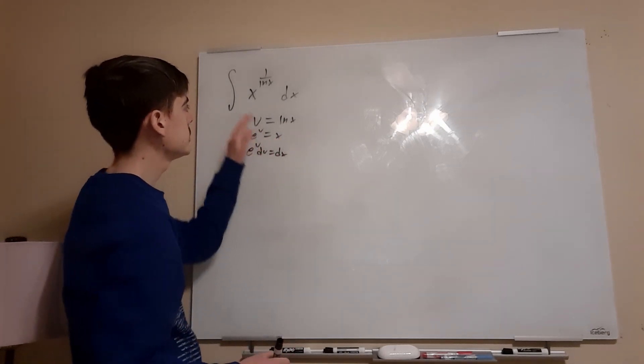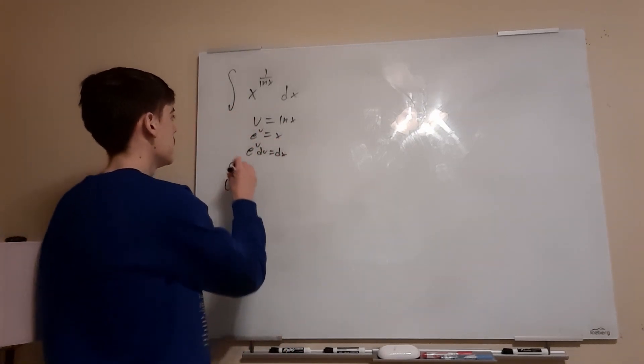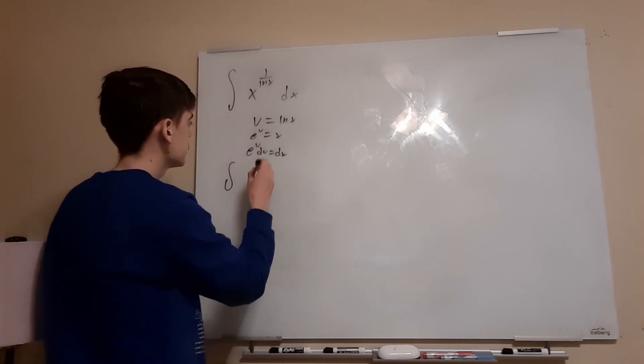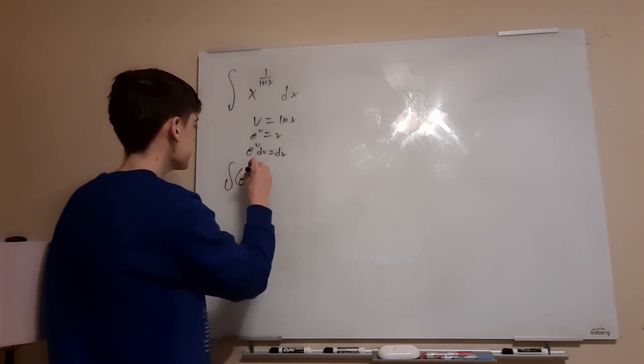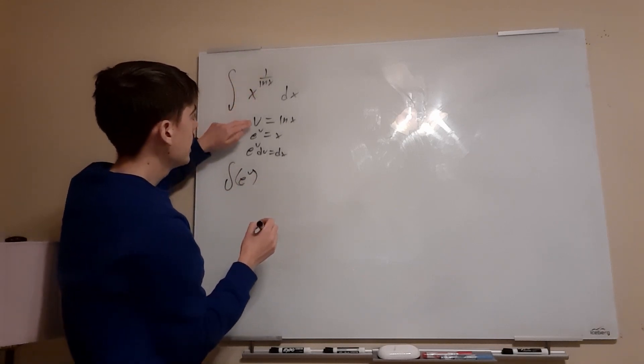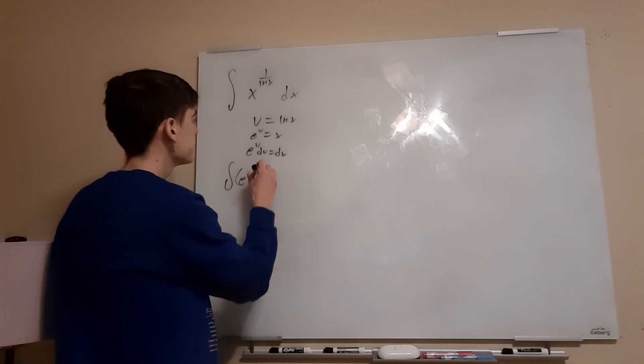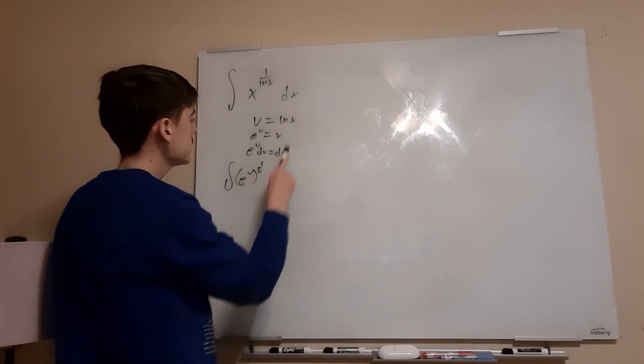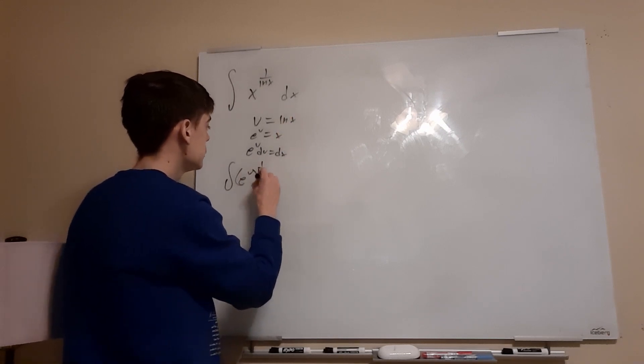So let's just plug this information back into our original integral. So x is right here. We could just replace that with e to the u, as we saw before. That will be raised to the power of 1 over ln x. ln x is u, so it'll just be 1 over u. And then again, we saw that dx was just equal to e to the u du.